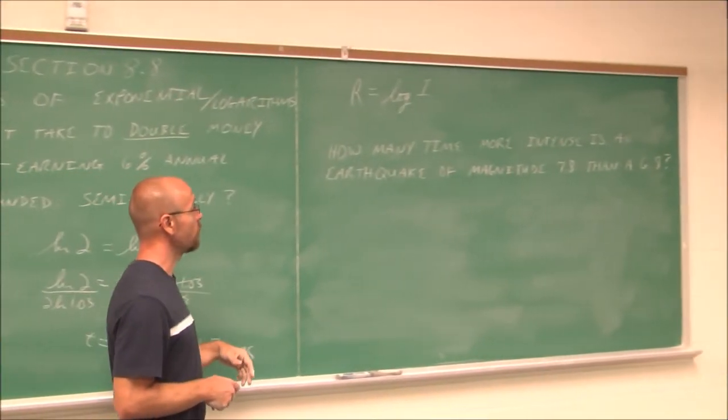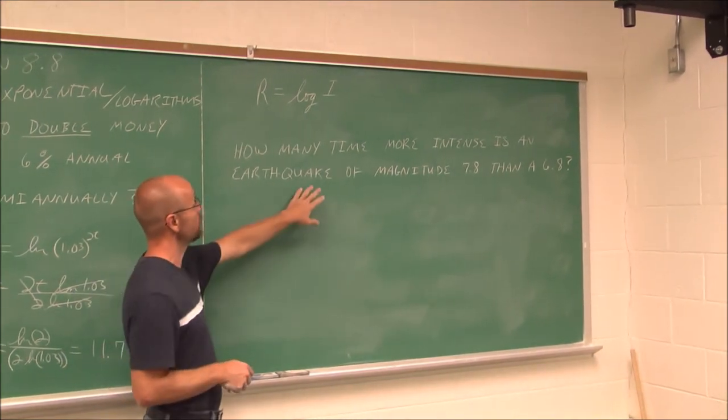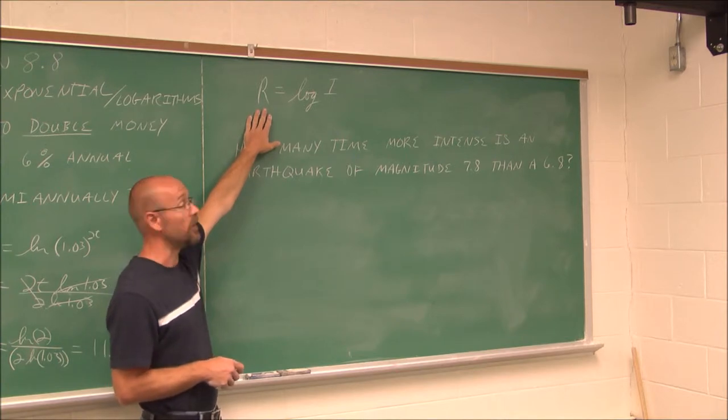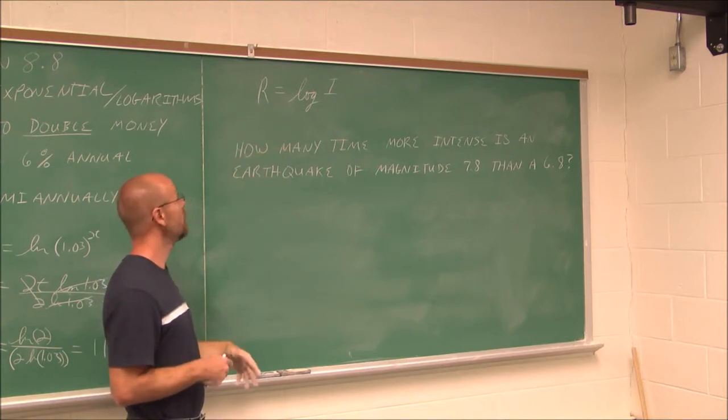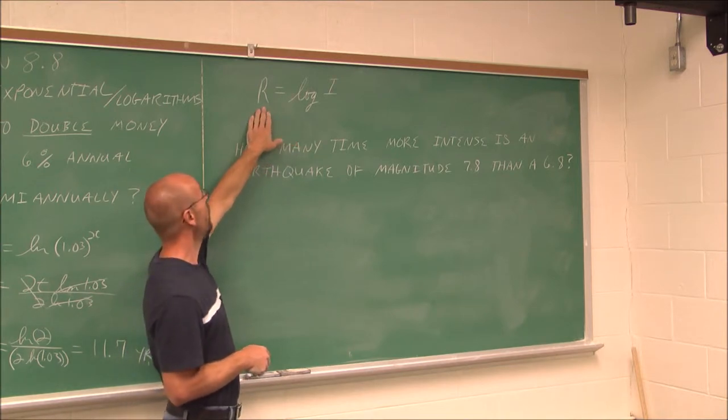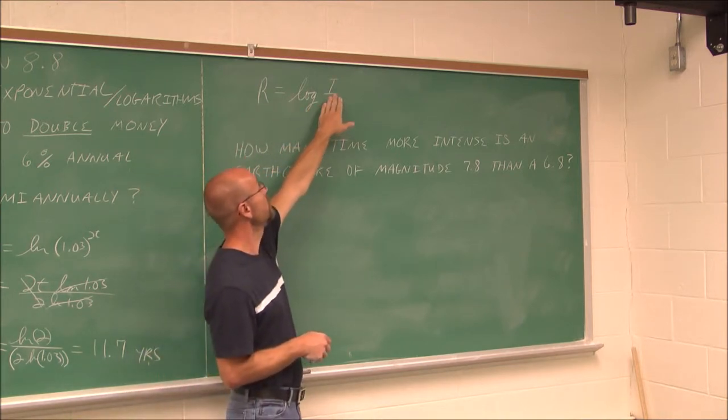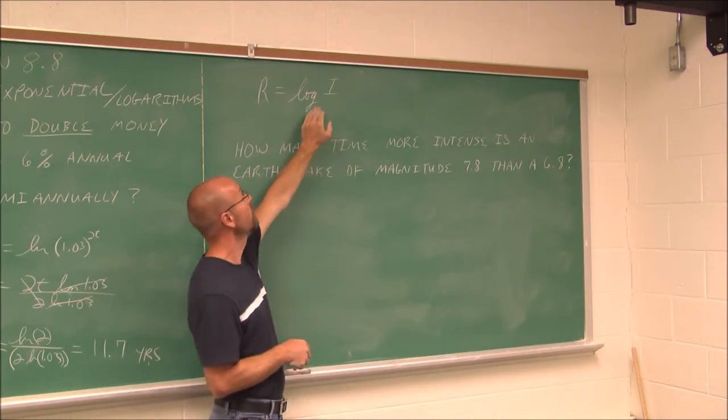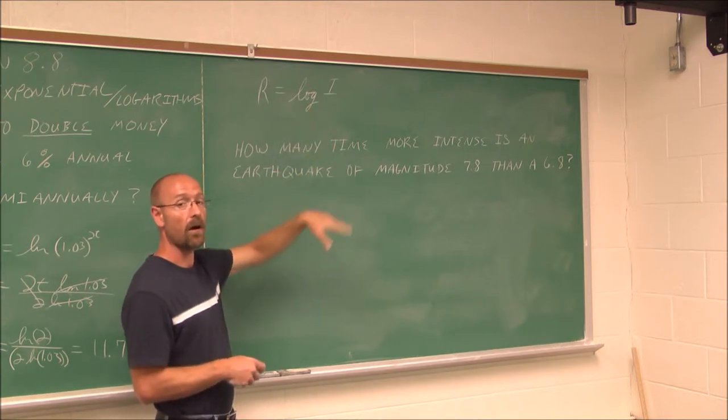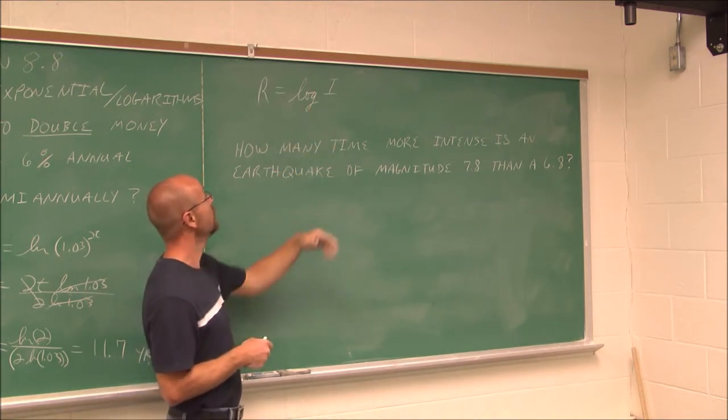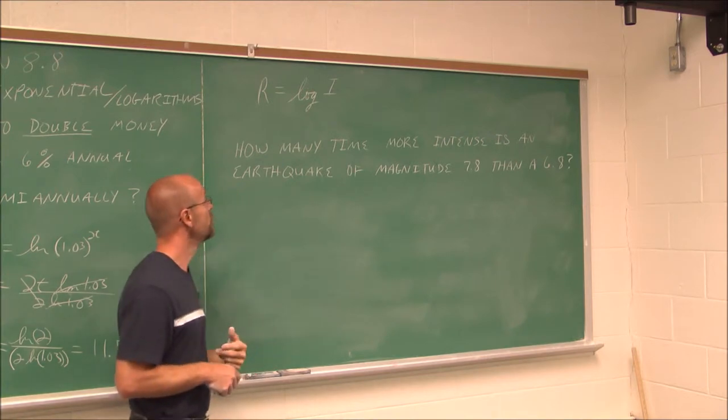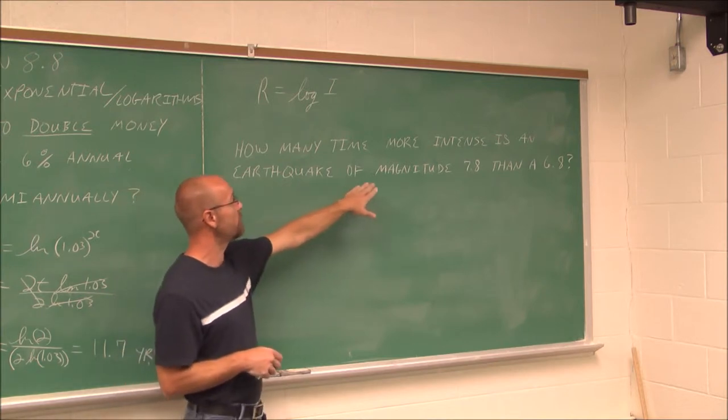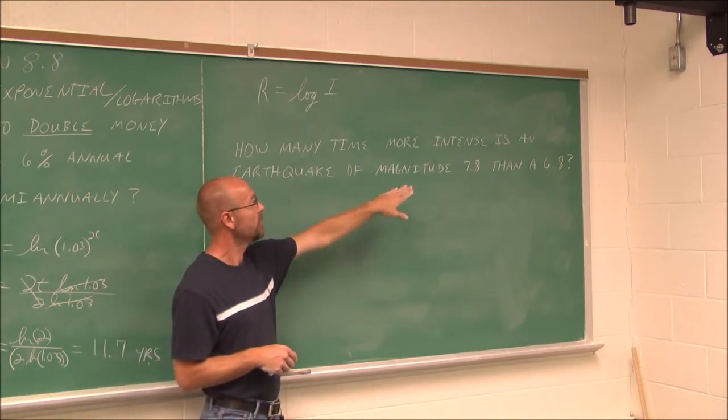Let's look at another example. The Richter scale is used to measure the intensity of earthquakes. So if r equals the log of the intensity, first thing I want to identify is, what is the base? It doesn't indicate the base. So that's a common log, it's a base 10. 10 to what power would give me i, the intensity of an earthquake?